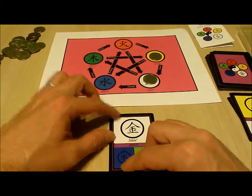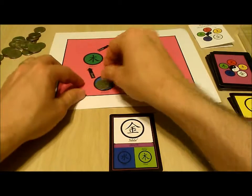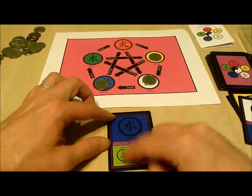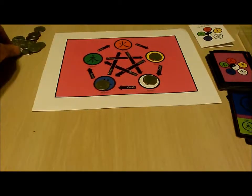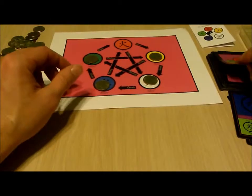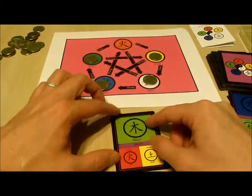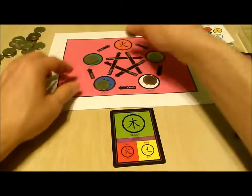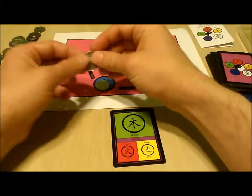Metal creates water, water creates wood, and finally wood creates fire but destroys earth. So we place the token on fire and remove one from earth.